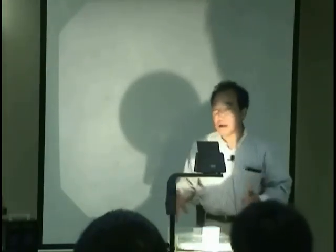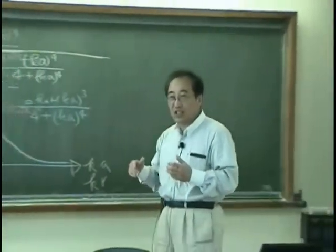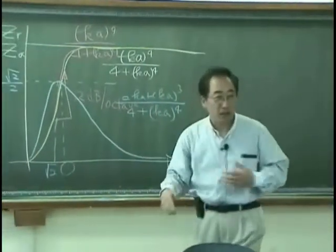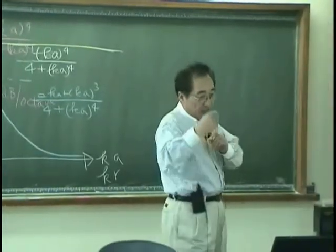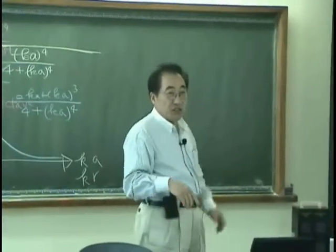So, you can see that cosine square theta. I mean, saying cosine square theta is too much. But, at least we can say, in this direction, radiation is very little.